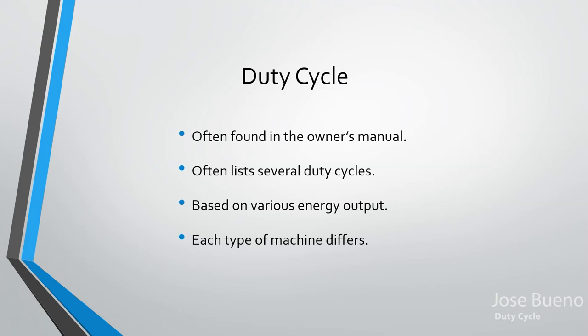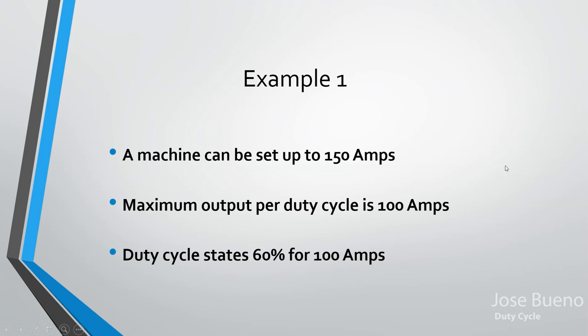For a constant current welding machine, duty cycle is based on the amount of amps you're using. Every machine is different — if you have a machine from Miller, one from Lincoln, and one from ESAB, they could be roughly the same size but have different duty cycles. Let's jump into an example: say we have a machine in the shop that can go up to 150 amps.